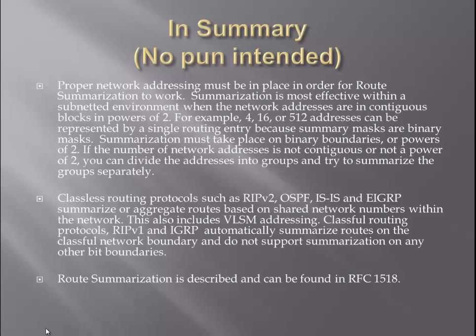Classless routing protocols such as RIP version 2, OSPF, ISIS, or EIGRP summarize or aggregate routes based on shared network numbers within the network, and also support variable length subnet mask addressing. Classful routing protocols such as RIP version 1 and IGRP automatically summarize routes at the classful network boundary and do not support summarization at other bit boundaries.